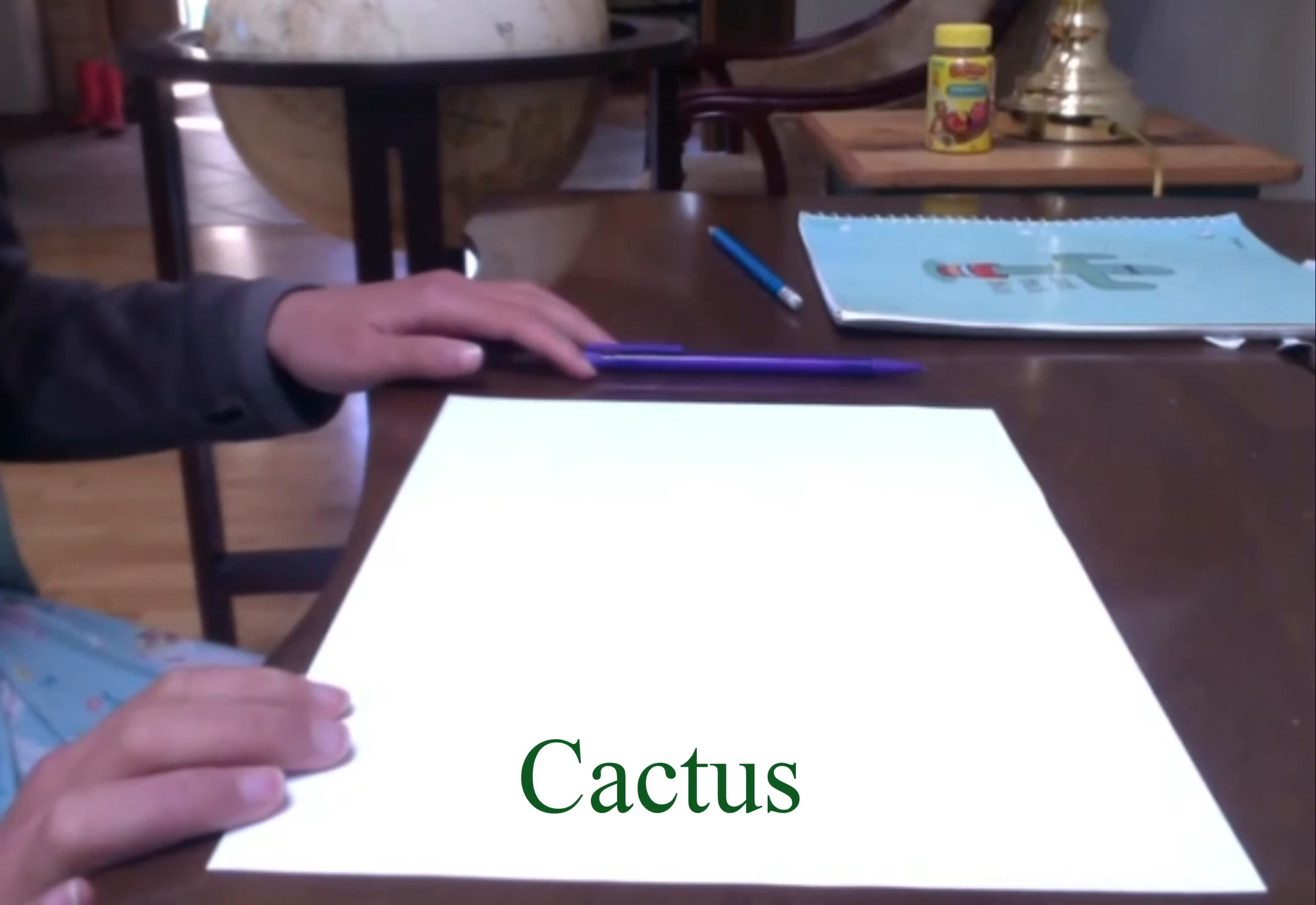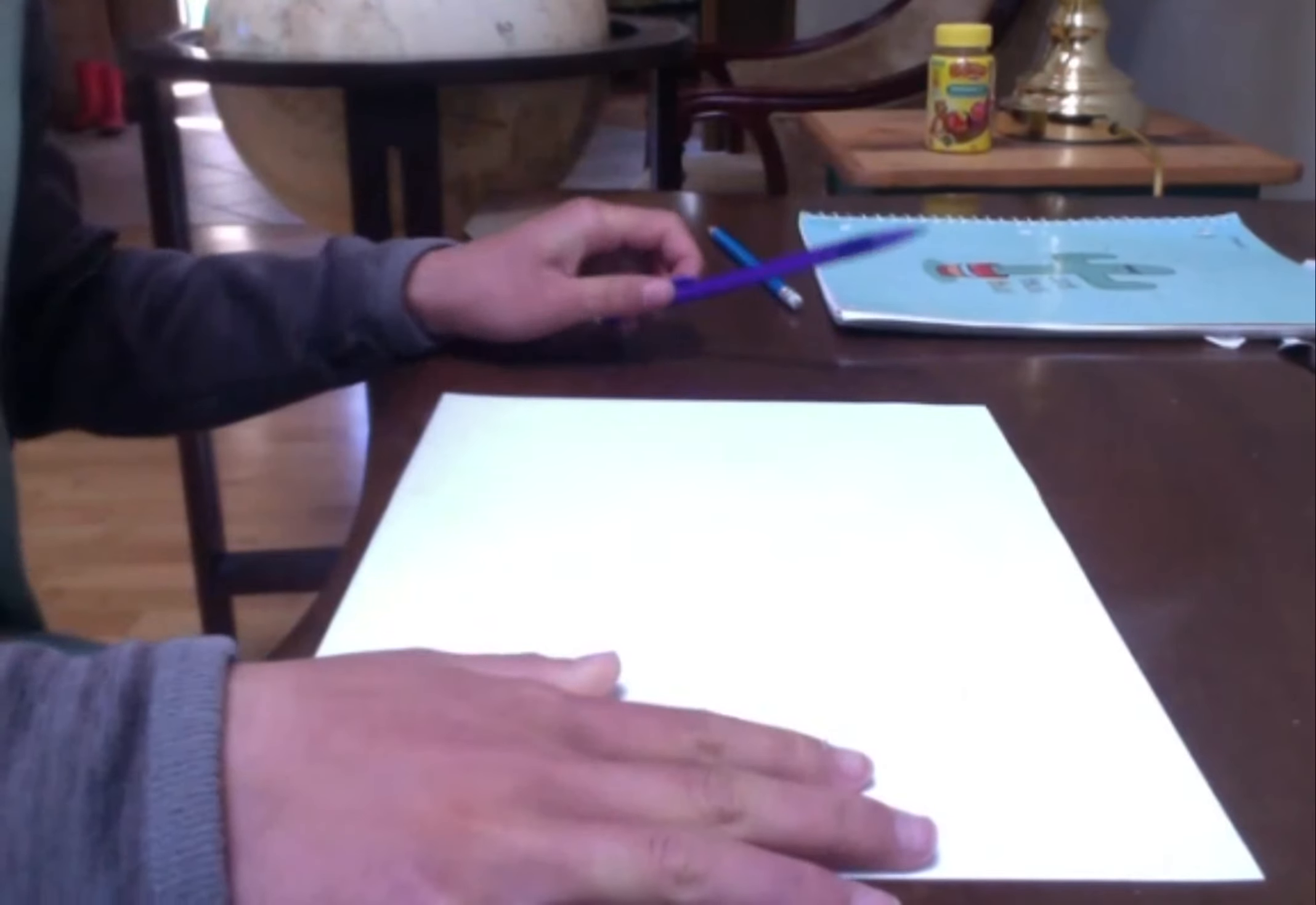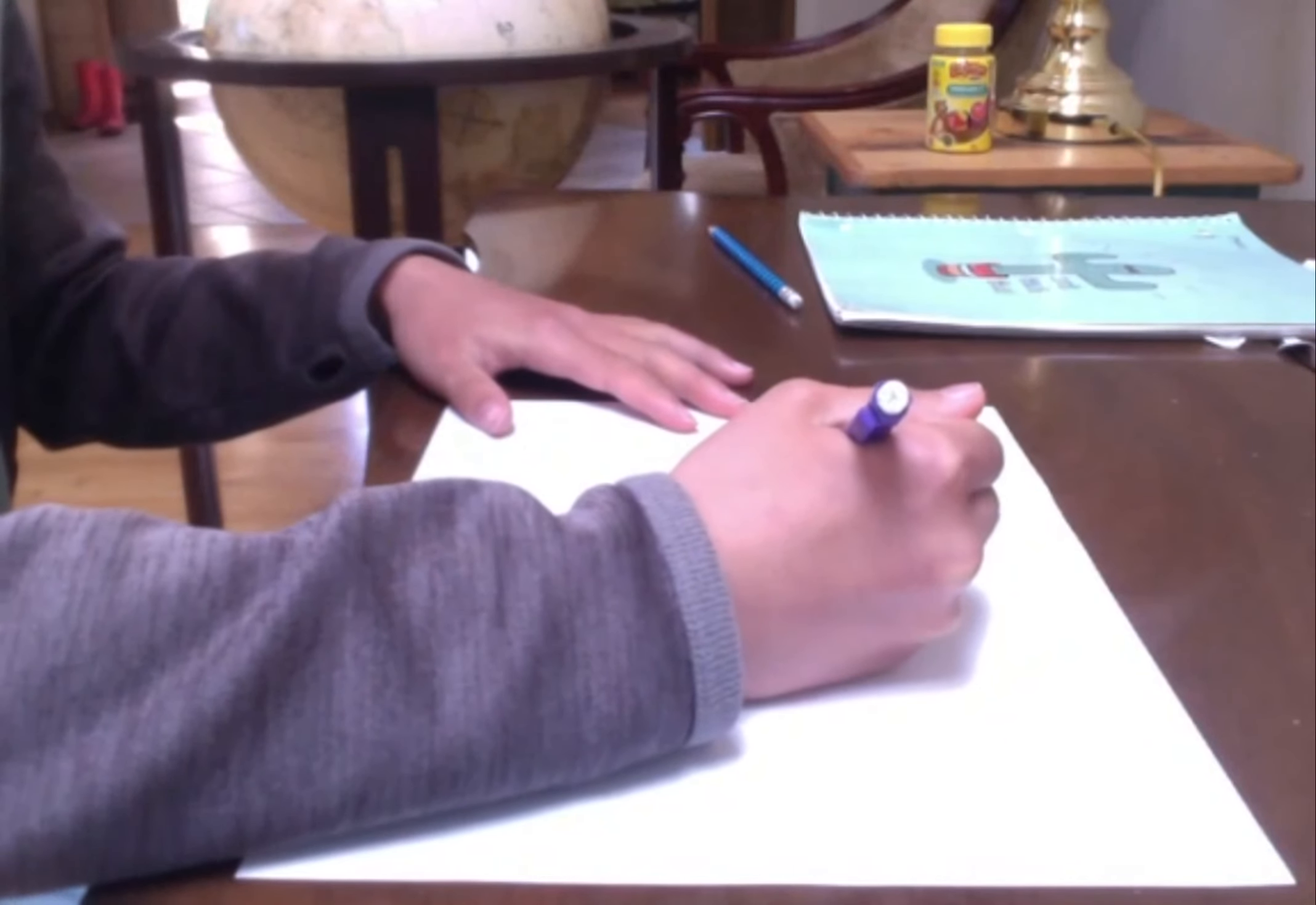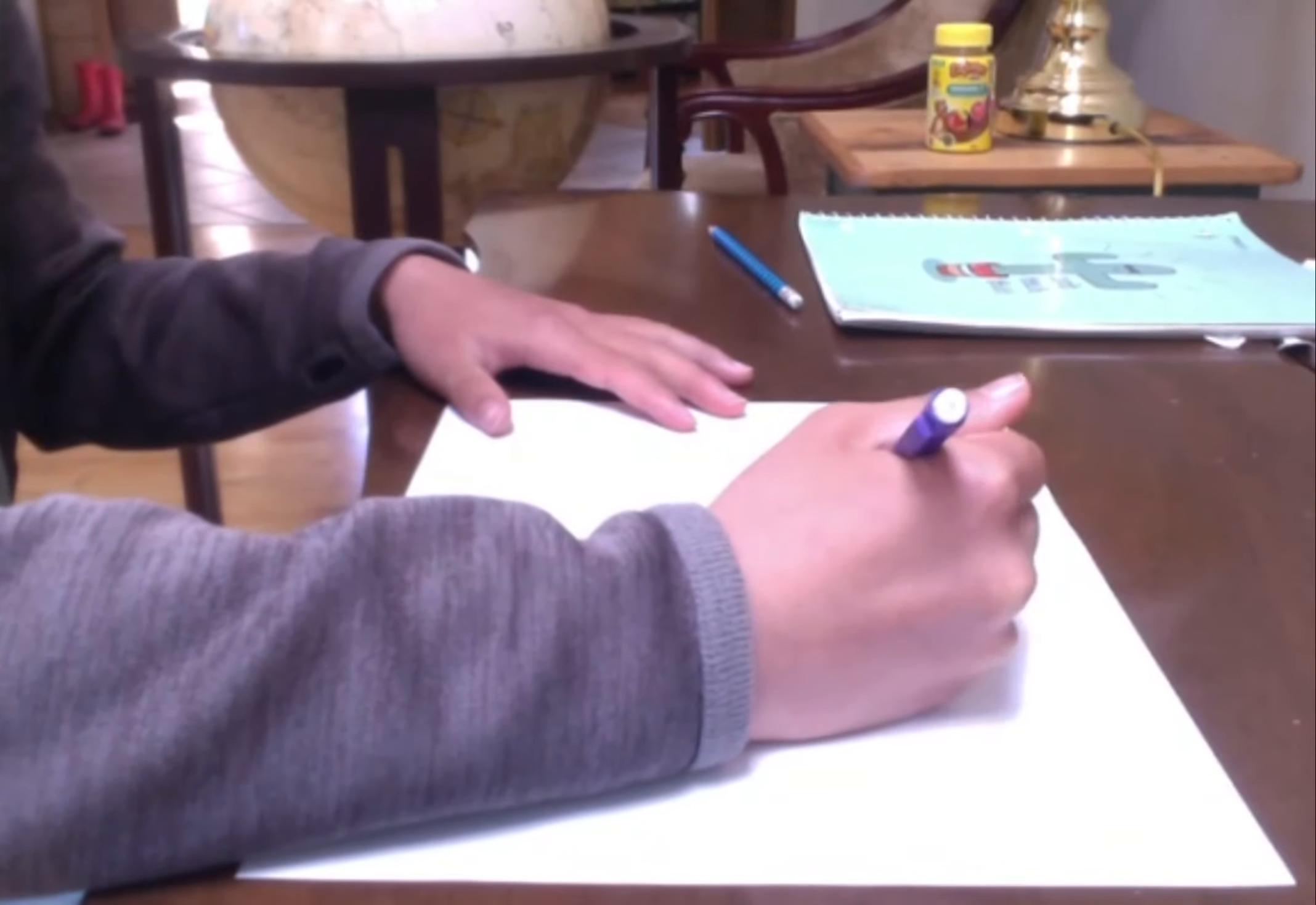So today I'm going to show you how to make a cactus with sunglasses-ish, I guess. So you're first going to take this and make like a finger like this.